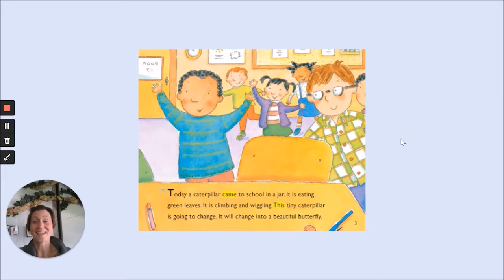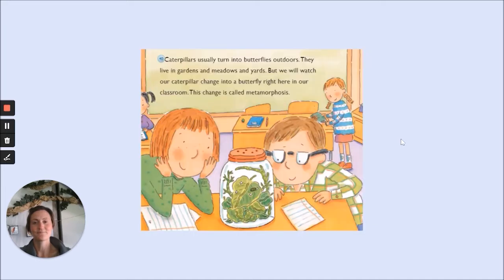Today, a caterpillar came to school in a jar. It is eating green leaves. It is climbing and wiggling. This tiny caterpillar is going to change. It will change into a beautiful butterfly. Caterpillars usually turn into butterflies outdoors. They live in gardens and meadows and yards. But we will watch our caterpillar change into a butterfly right here in our classroom. This change is called metamorphosis.